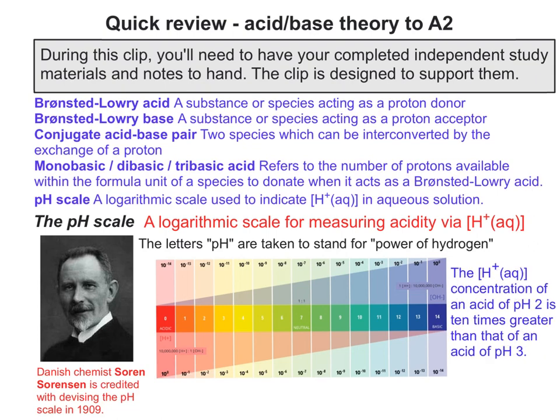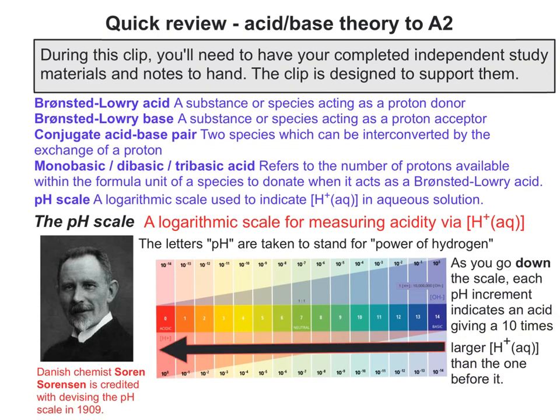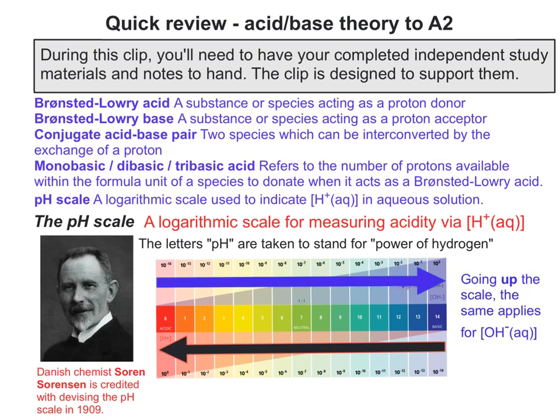To give you an idea of the scaling: the hydrogen ion concentration of an acid of pH 2 is 10 times greater than that of an acid of pH 3. As you go down the scale, each pH increment indicates an acid giving a 10 times larger hydrogen ion concentration than the one before it. The same applies going up the scale for OH- in aqueous solution.